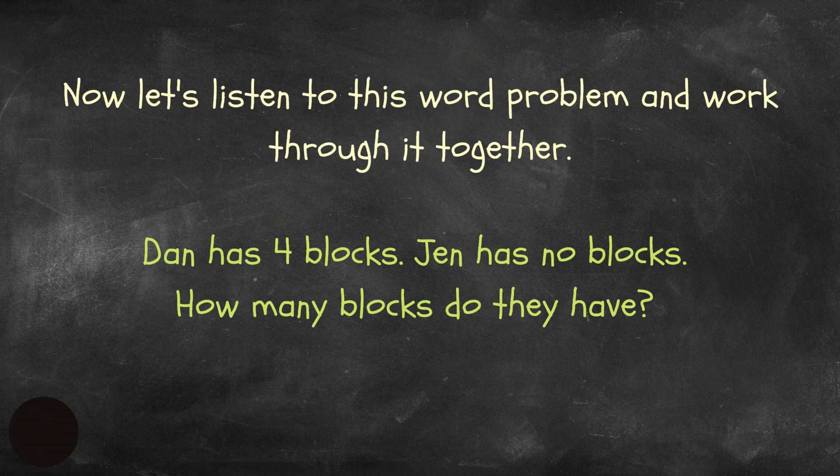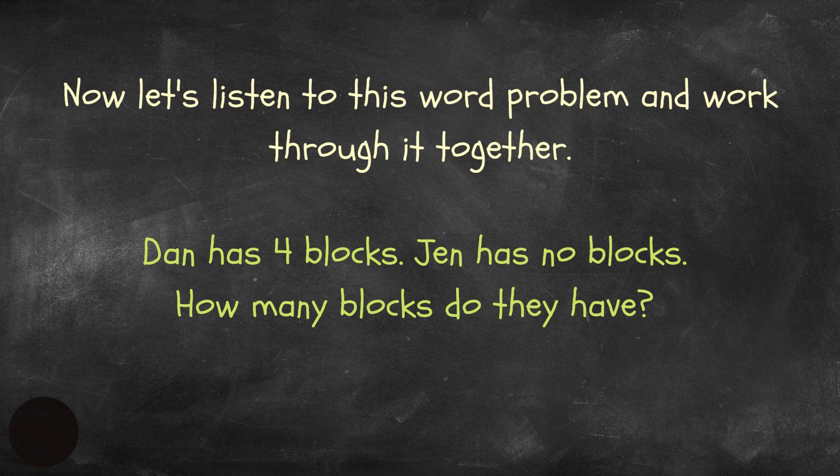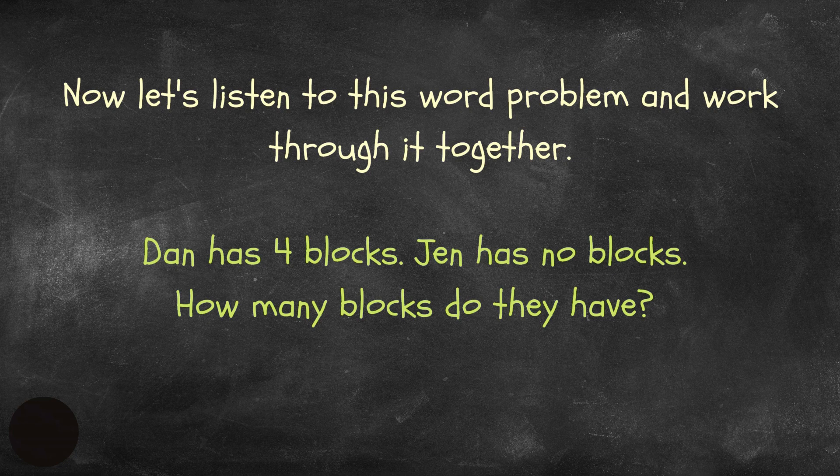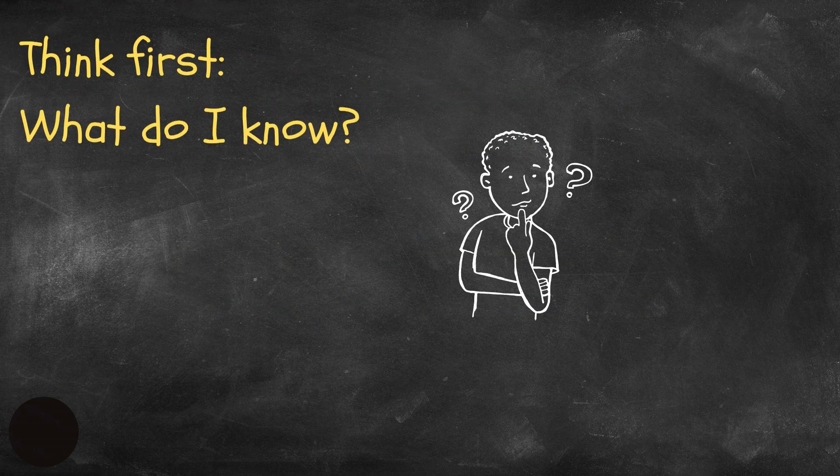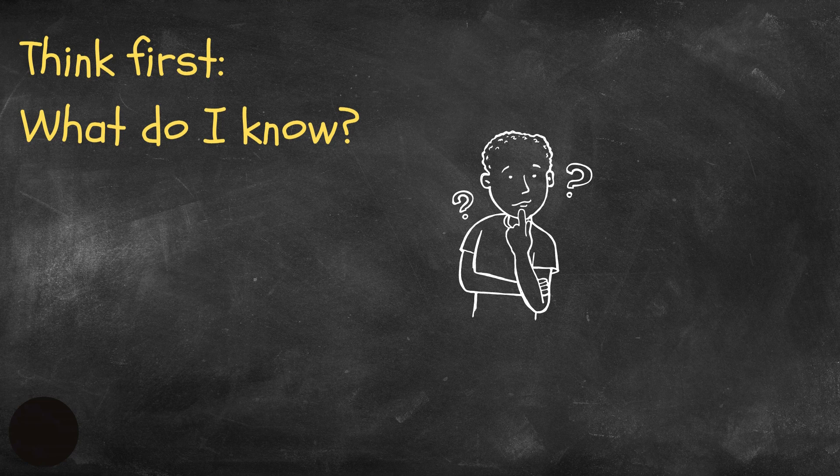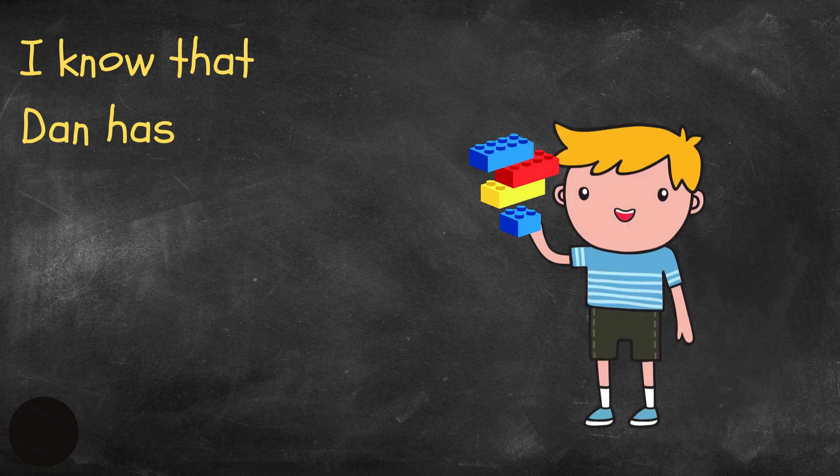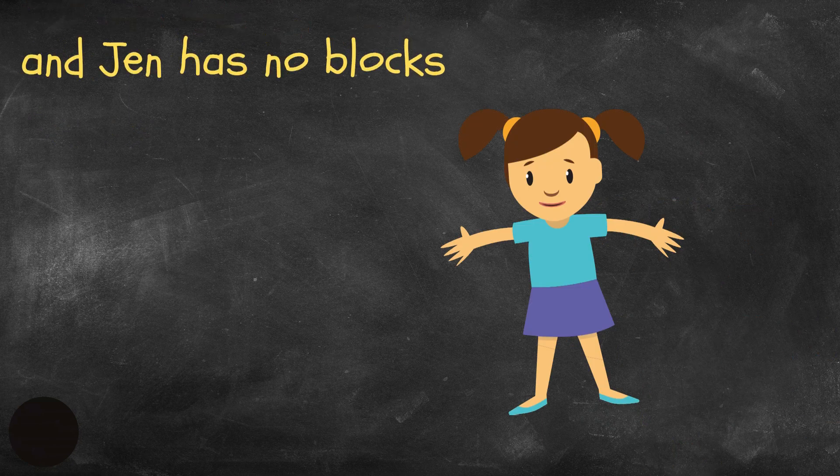Here's a word problem. Listen to the word problem and try to solve it. Dan has four blocks. Jen has no blocks. How many blocks do they have? Think first. What do I know? Well, I know that Dan has four blocks. And Jen has no blocks.